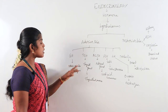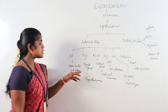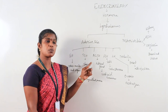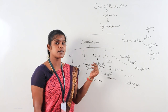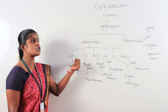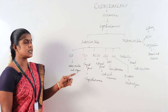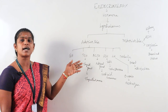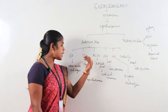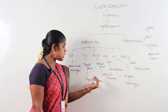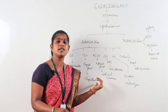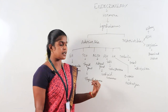Growth hormone acts on bones, muscles, and organs. TSH is the thyroid stimulating hormone, which acts on the thyroid gland. The thyroid gland secretes two major hormones: T3 and T4.